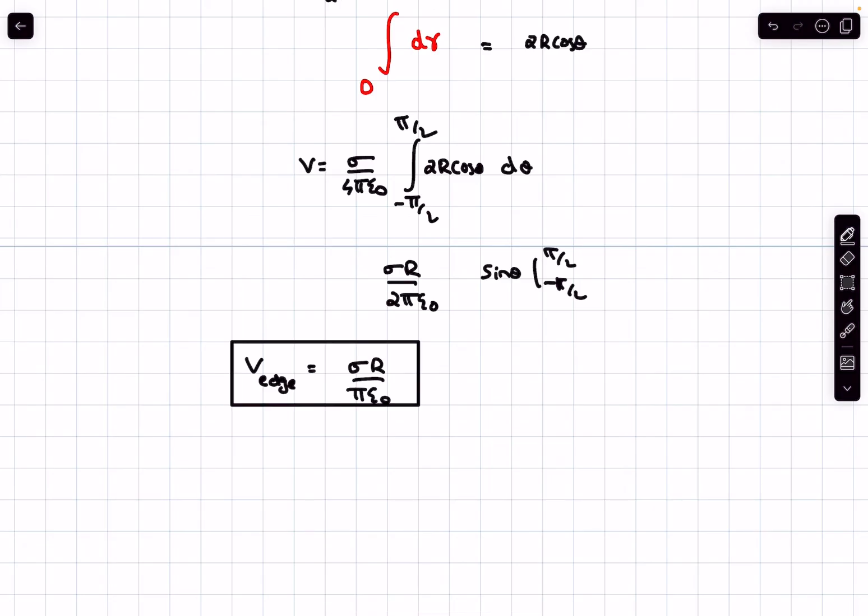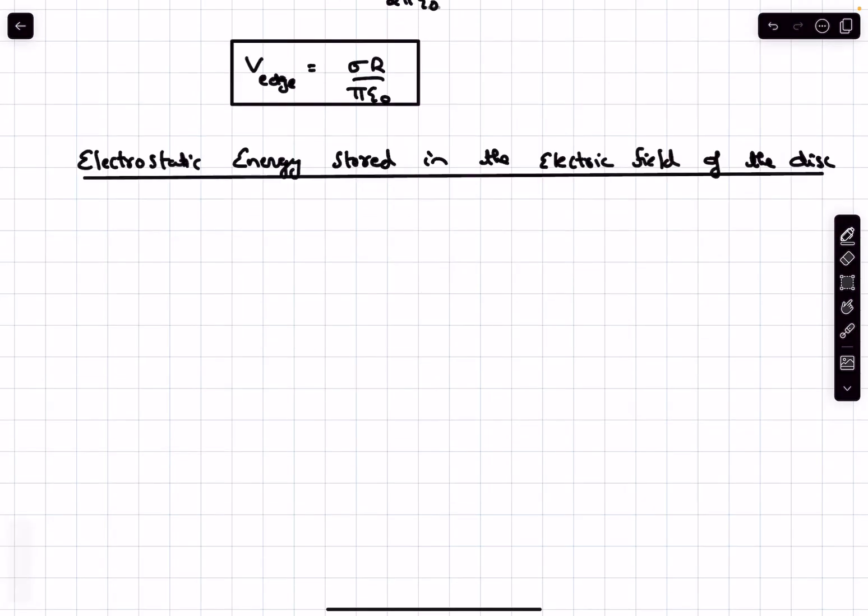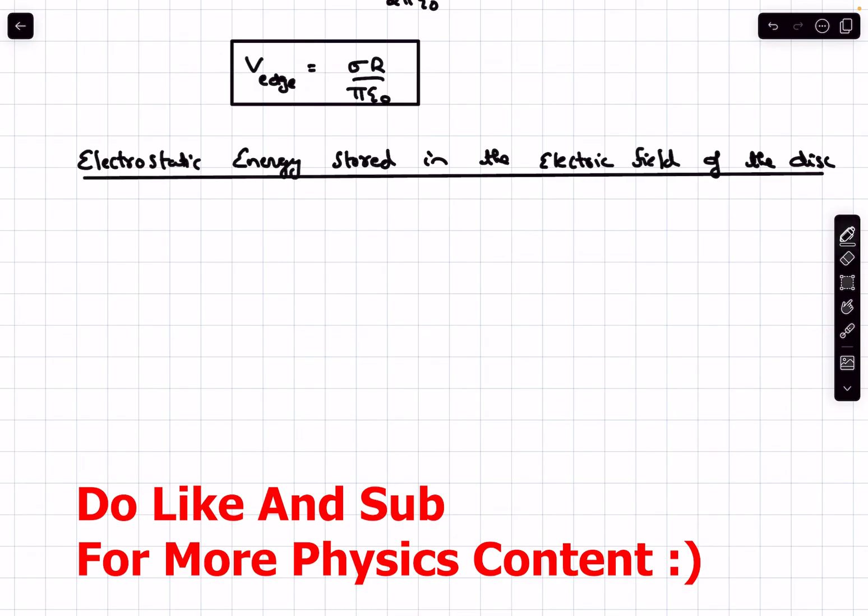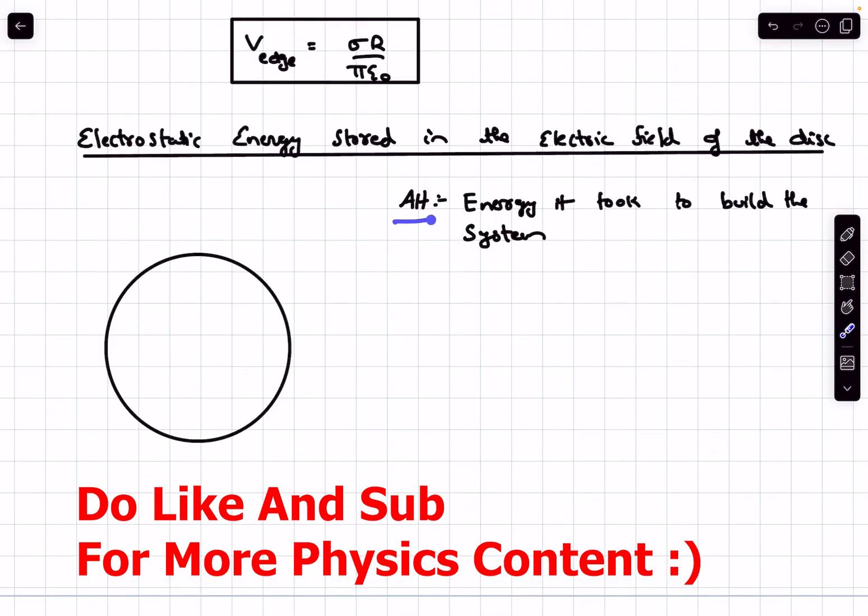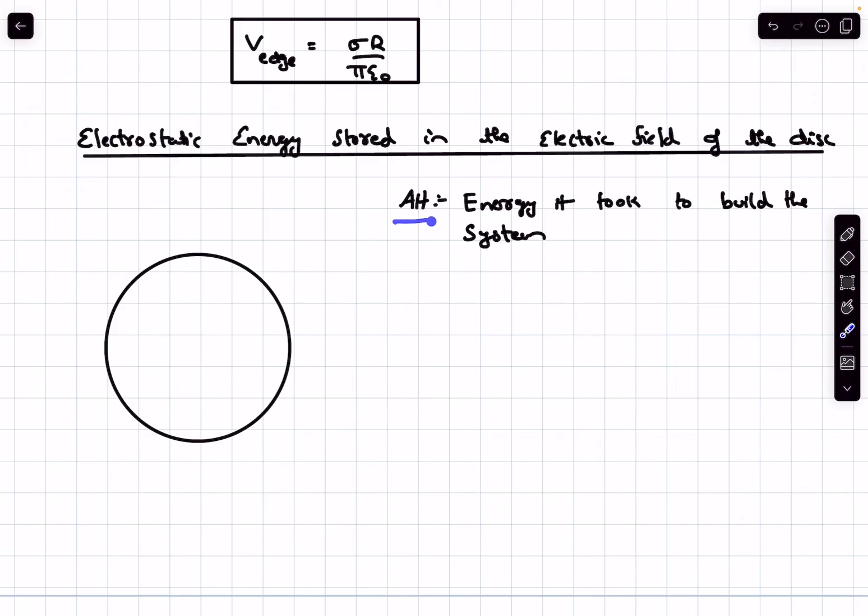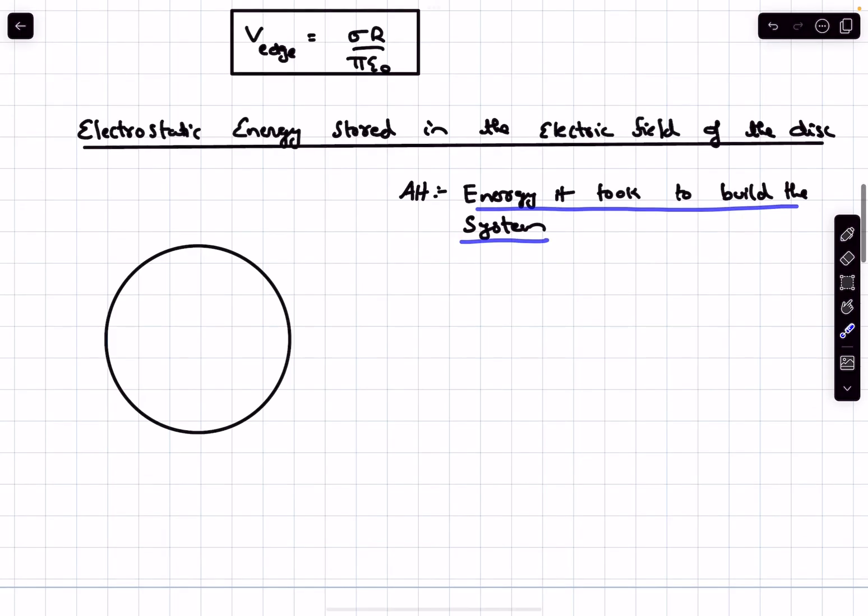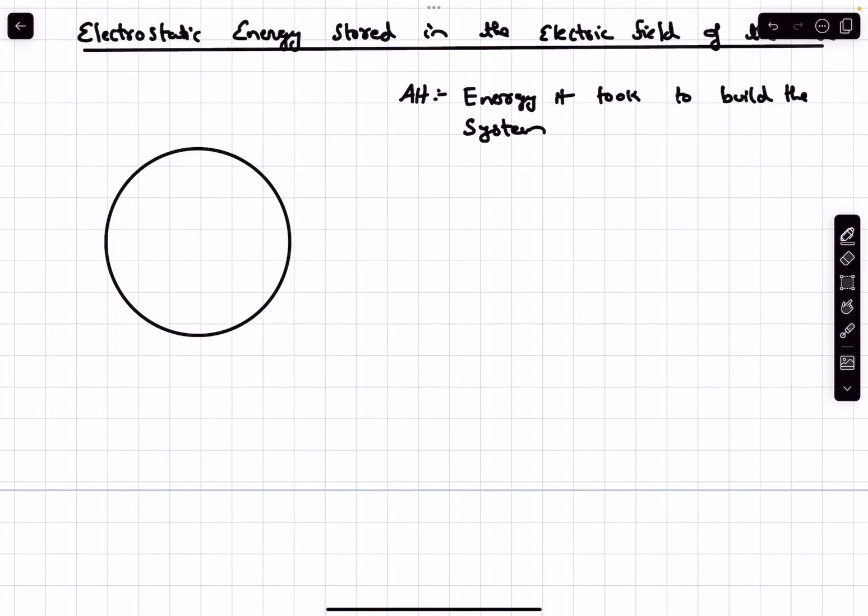Now let's discuss the electrostatic energy stored in the electric field of the disc. An alternate way to finding the electrostatic energy stored in the electric field is to find out the energy it took to build the system. In our case it is a uniformly charged disc. Let's say at any general time the radius of our disc is smaller, and clearly smaller is less than capital R because we have not fully built our disc yet.